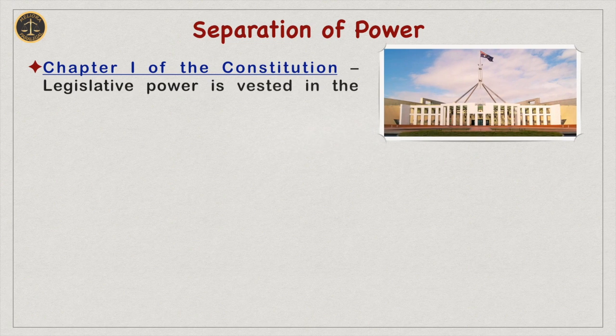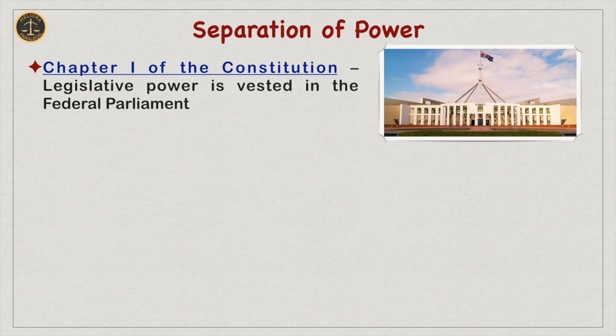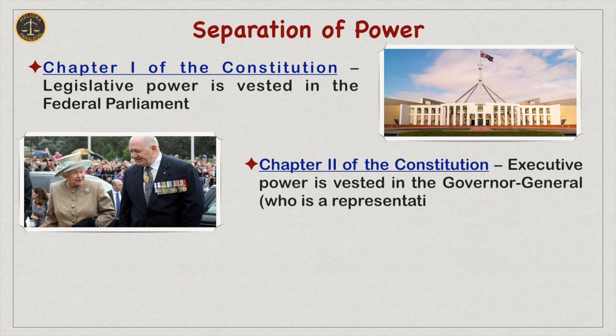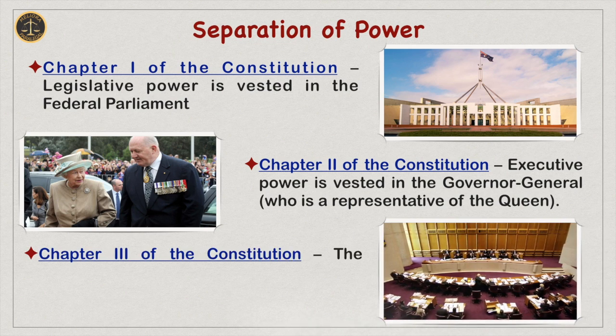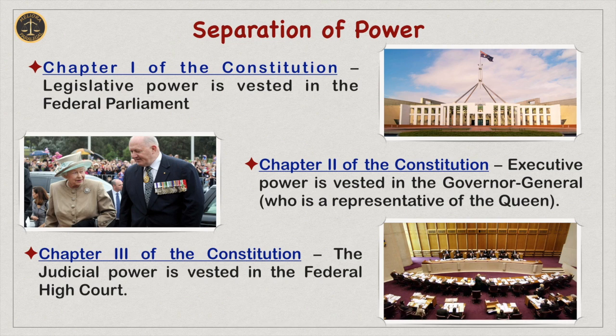Next, Separation of Power. The Constitution of Australia has separated the power among the different governing bodies. Chapter 1 of the Constitution explains that legislative power is vested in the Federal Parliament. The Second Chapter explains that executive power is vested in the Governor-General, who is representative of the Queen. The Third Chapter explains that judicial power is vested in the Federal High Court.